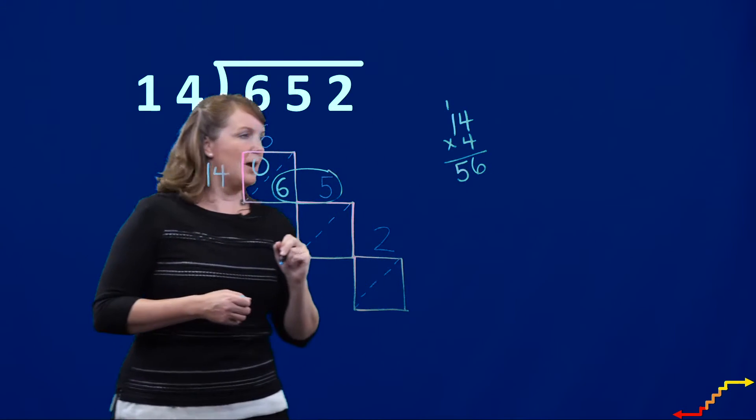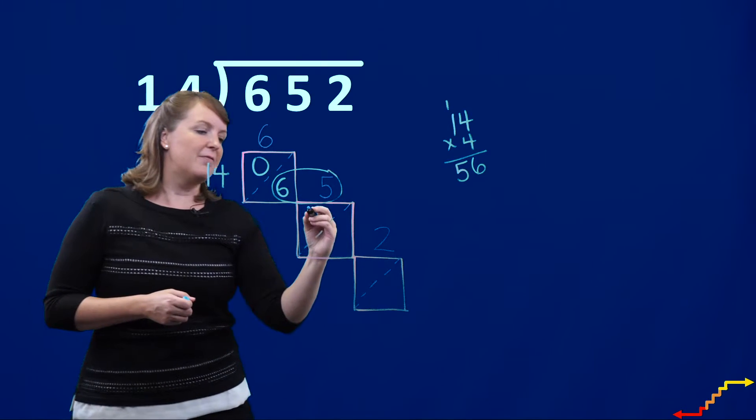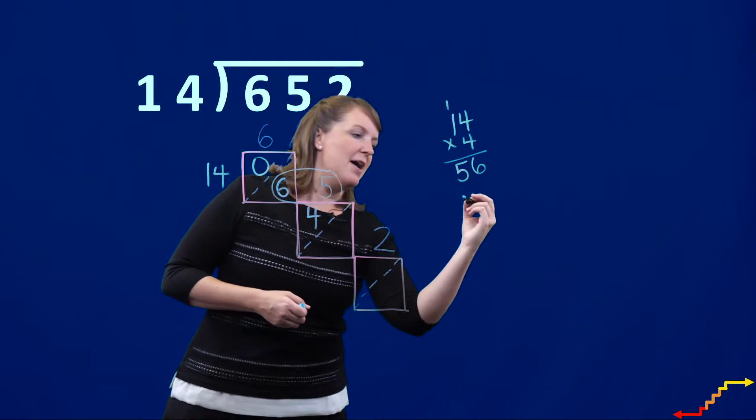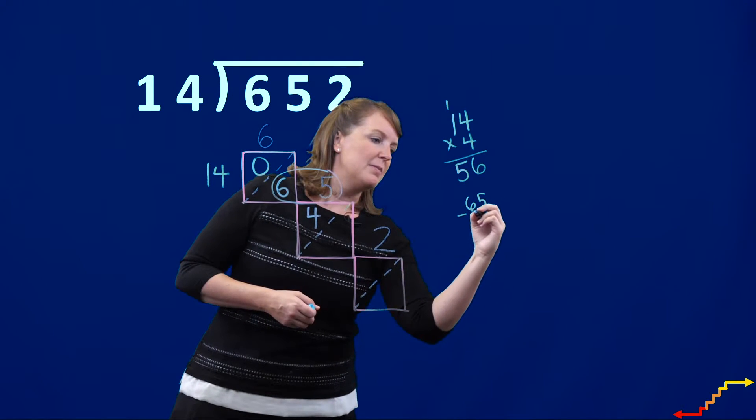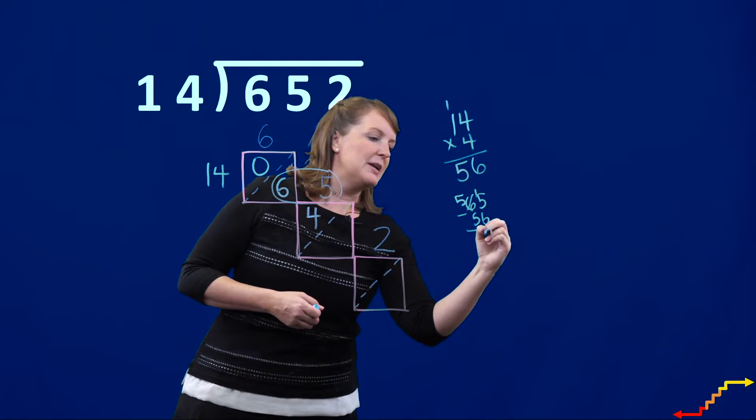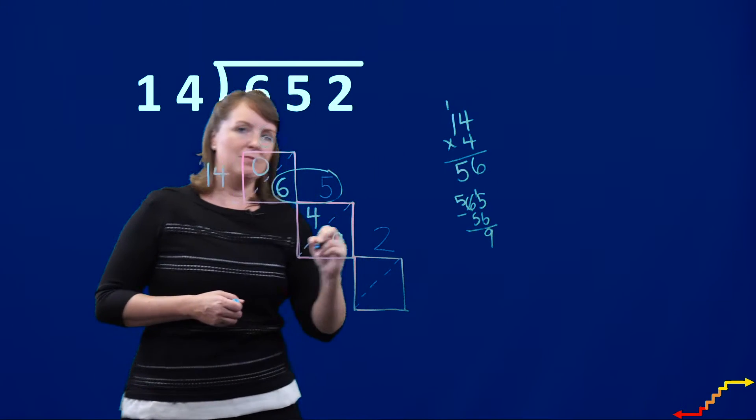I'm very close. So I can make four full groups of 14. And then if I have 65 minus 56, then how many do I have remaining? I have nine remaining.